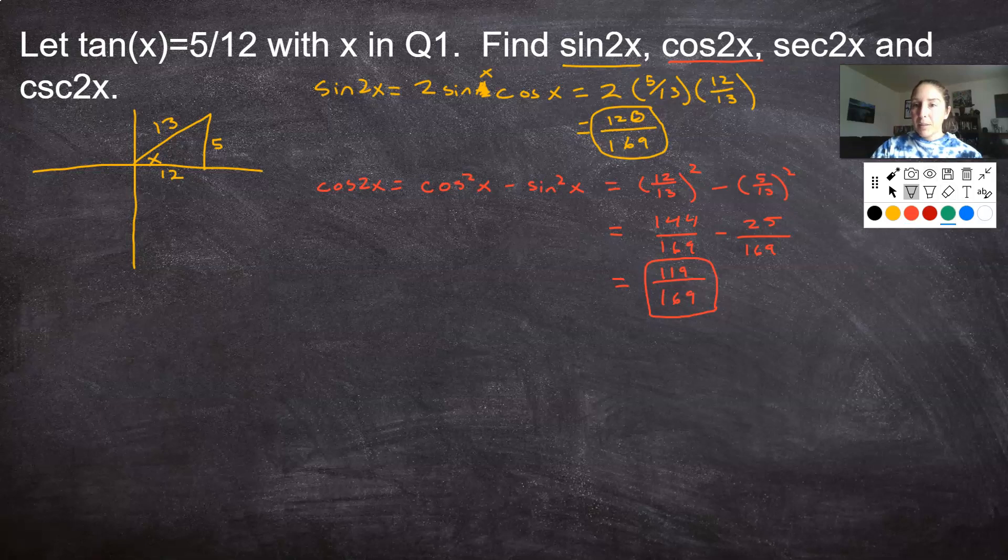And we have cosine 2x. Next on our list, secant of 2x. Secant of 2x. I don't have a formula for secant, so I have to use some relationships here. Secant relates to sine or cosine. How? Oh, it's 1 over cosine. These reciprocal identities will be your best friend. They're going to save you a ton of work. So secant is 1 over cosine, which means I figure out what my cosine was. Got it here. Secant is the reciprocal. So if cosine of 2x was 119 over 169, then secant of 2x is going to be 169 over 119. In other words, just flip it. Reciprocal.